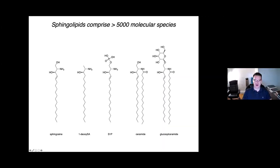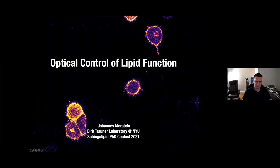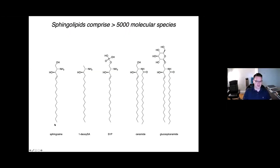This audience is certainly very familiar with the great structural diversity and complexity of different lipid species, and in particular different sphingolipids, and doesn't need an introduction into that, or into the very diverse functions of different sphingolipids. This is just a basic sphingosine, but we know that even the backbone of a sphingolipid can be different depending on the amino acid preference by SPT.